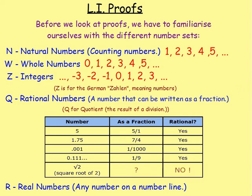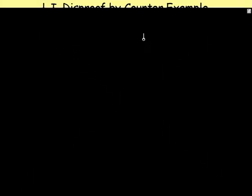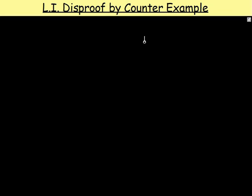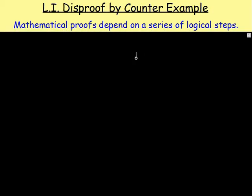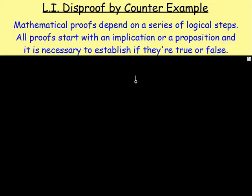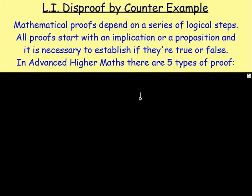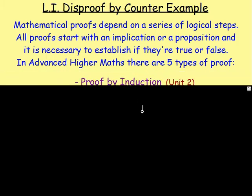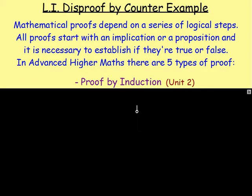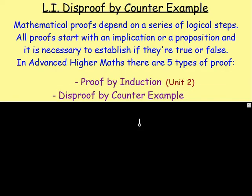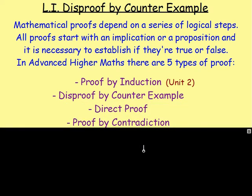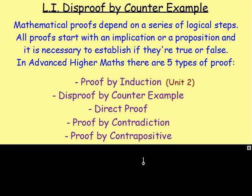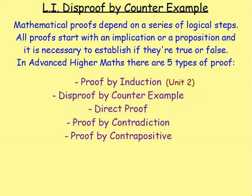Make sure you are familiar with the different sets. Let's start off then with the proofs chapter and disproof by counterexample. Mathematical proofs depend on a series of logical steps. All the proofs we come across will start off with an implication or proposition, and it's necessary to establish whether they are true or false. In Advanced Higher Maths, there are five different proofs: proof by induction, which we've already come across; disproof by counterexample; direct proof; proof by contradiction; and proof by contrapositive.